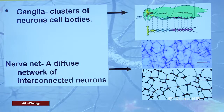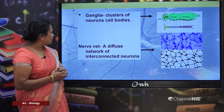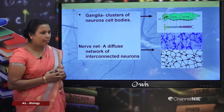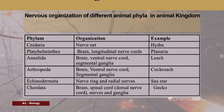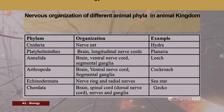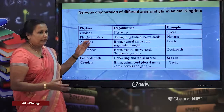Here is a summary of the organization of the nervous system across animal phyla: Cnidaria have a nerve net (example: hydra); Platyhelminthes have a brain and longitudinal nerve cords (example: planaria); Annelida have a brain, ventral nerve cord, and segmented ganglia (example: leech); Echinodermata have a nerve ring and radial nerves (example: sea star); Chordata have a brain, spinal cord, nerves, and ganglia (example: salamander).